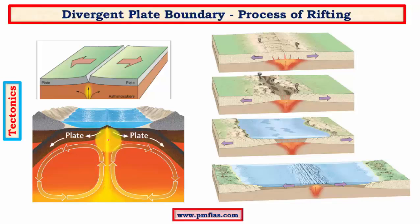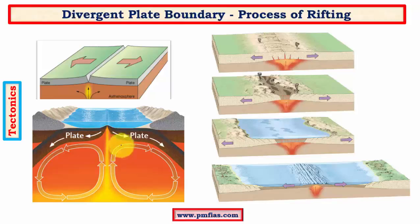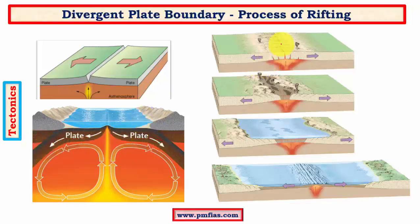In the reverse case, when two convectional cells converge and we have falling limbs, we will have a convergent boundary. But here we can see two rising limbs converging, giving rise to our divergent plate boundary. The movement of magma drags the plates away from each other. The first step in this process is upwarping of the earth's crust — the deformation of the earth's crust because of the divergent plates and the pressure from the rising limbs of the convectional cells.